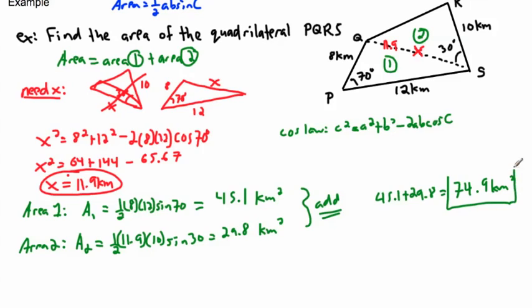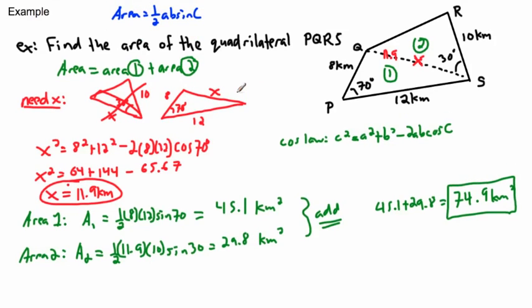So we're finally done. Although this problem looked really complicated, we were able to use a combination of the law of cosines and the area formula for triangles to solve it. It was a bit sneaky, but you can totally do it.